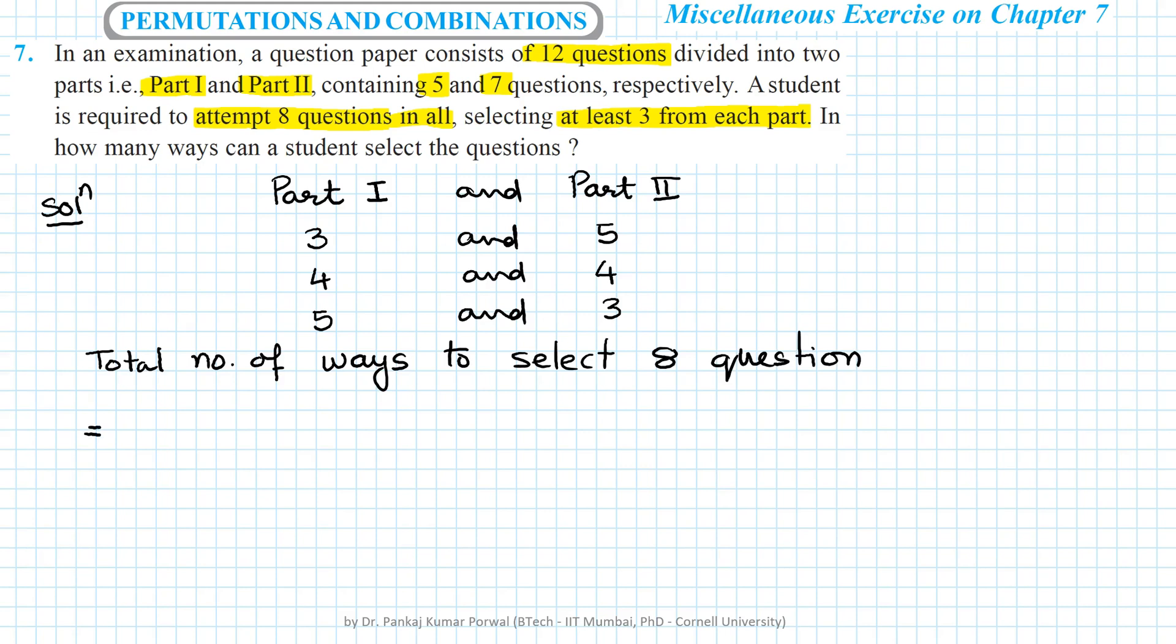will be: first we select 3 out of 5 in Part 1, that is 5C3, multiplied by 7C5, plus 5C4 multiplied by 7C4, plus 5C5 multiplied by 7C3.